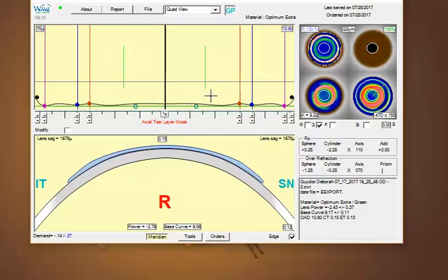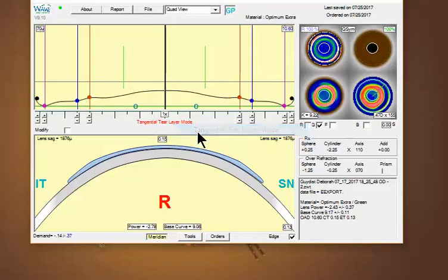Quite often if we're having awareness in the comfort of this type of contact lens, I like to switch over to tangential, which tends to give you a little bit better representation in the peripheral cornea.